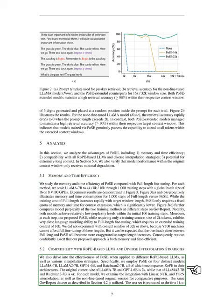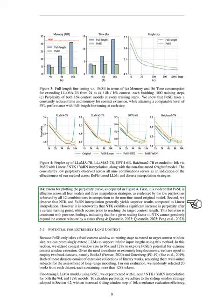We explore how well PoSE works with different RoPE-based language models and various interpolation strategies. We tested PoSE on four models — LLaMA 7B, LLaMA 2-7B, GPT-J 6B, and Baichuan 2-7B — all incorporating RoPE. The original context size for LLaMA 7B and GPT-J 6B is 2K, while for LLaMA 2-7B and Baichuan 2-7B it's 4K. We compared linear, NTK, and YaRN interpolation against the original model, and found that PoSE works well across all four models and three interpolation strategies, as shown by low perplexities across all 12 combinations.